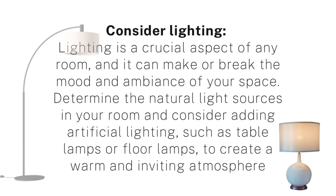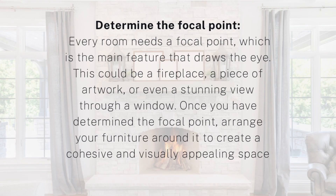Consider the lighting. Lighting is a crucial aspect of any room and can make or break the mood and ambience of your space. Determine the natural light sources in your room and consider adding artificial lighting such as a table lamp or a floor lamp to create a warm and inviting atmosphere. Also determine the focal point — every room needs a focal point, which is the main feature that draws the eye. This could be a fireplace, a piece of artwork, or a stunning view through a window. Once determined, arrange your furniture around it.